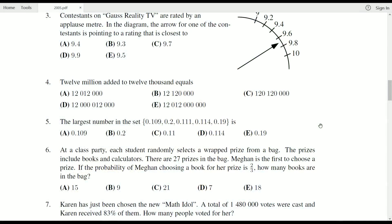It's sort of a word problem in the sense that the numbers in it are written out in words. Twelve million added to twelve thousand equals, and we have a bunch of options here.